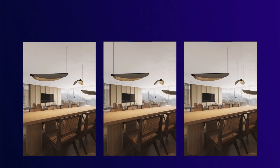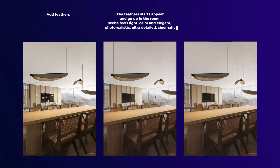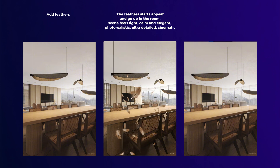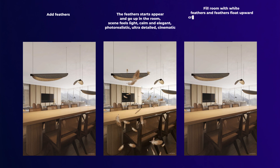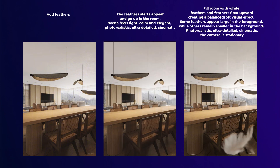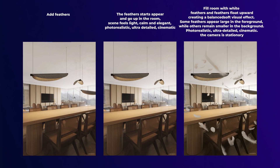Let's test three prompts and see how accuracy affects results. In the first option, I just typed 'add feathers' — and as you can see, it's a bit off; I wouldn't use it. In the next one, I typed 'the feathers start to appear and go up in the room, scene feels light, calm and elegant, photorealistic, ultra-detail, cinematic.' That's better, but I don't like the color of the feathers, and it's still concentrated in two places rather than the whole room. With the last prompt, I achieved the best result.